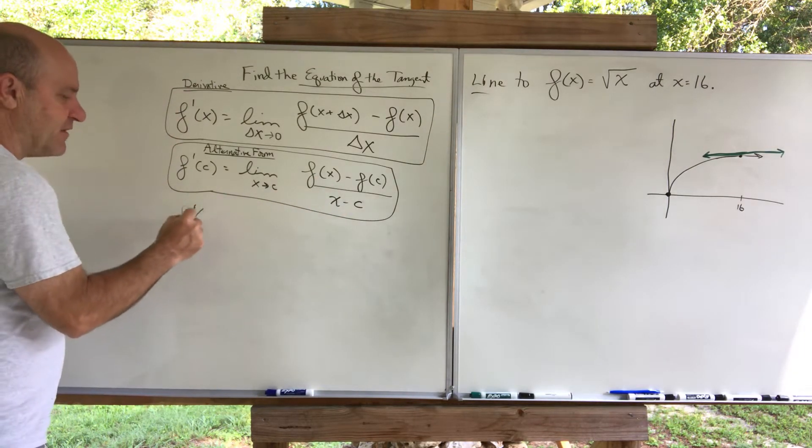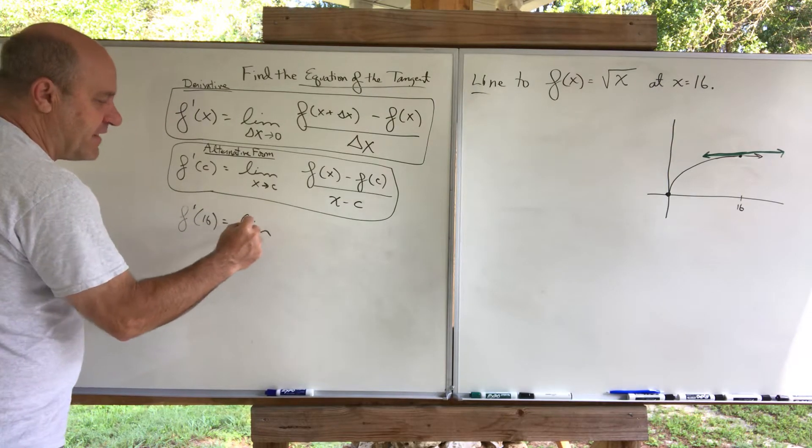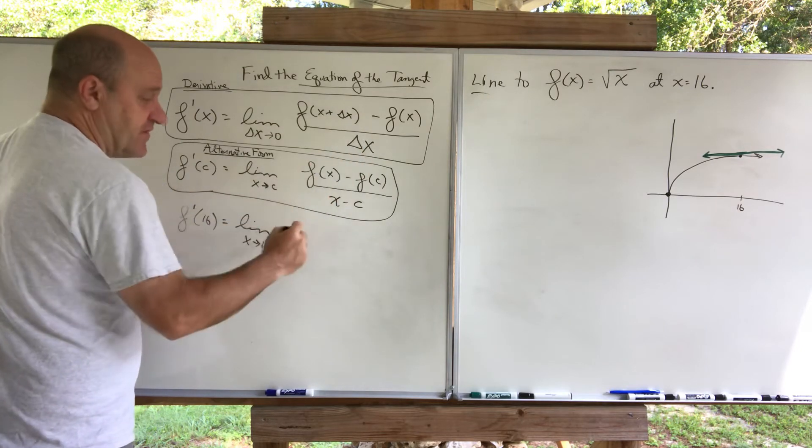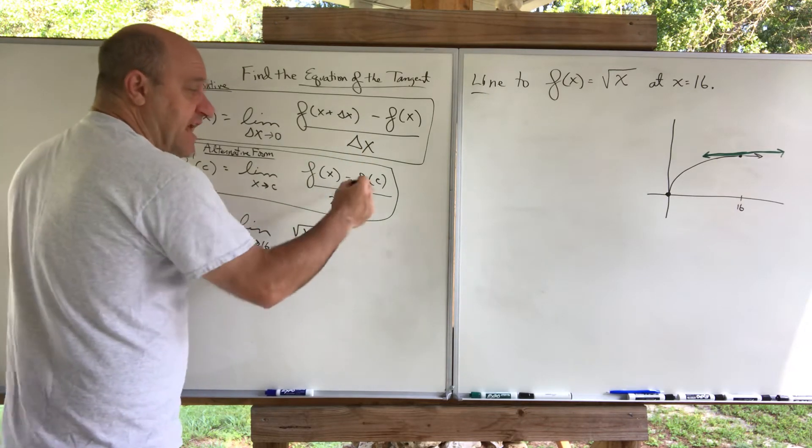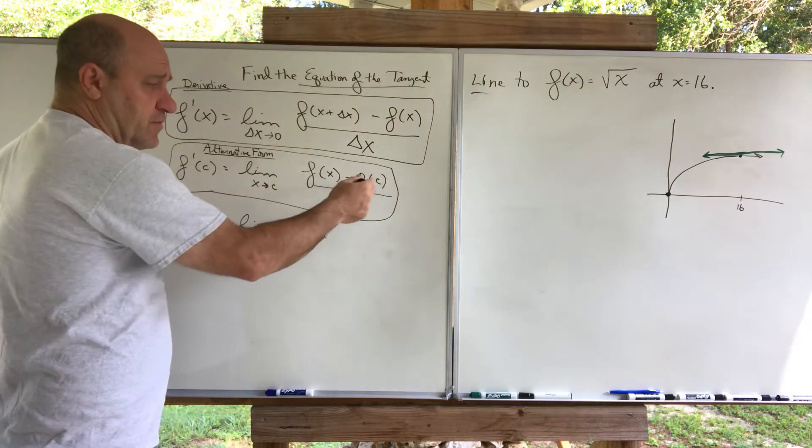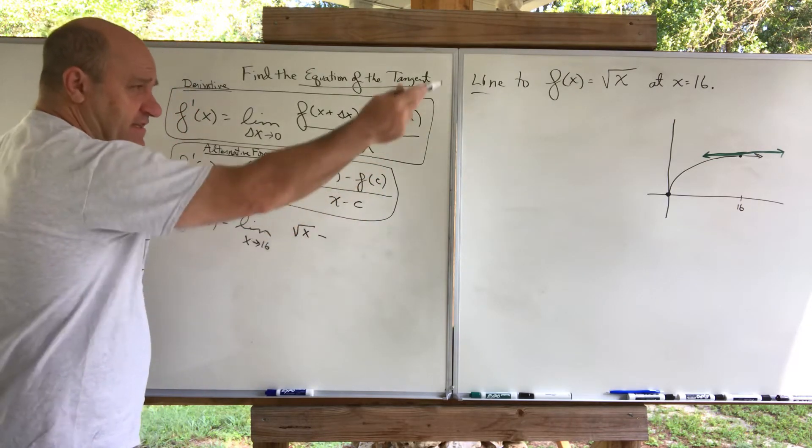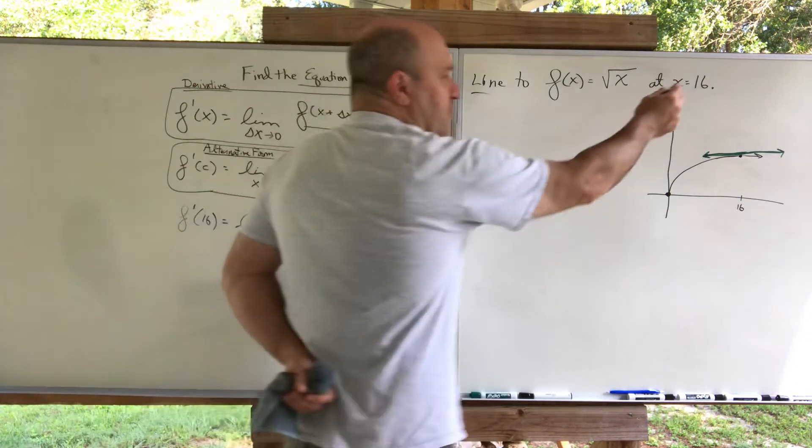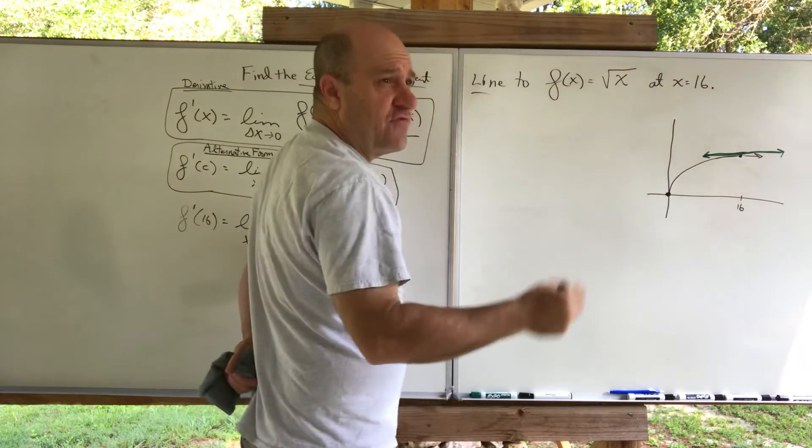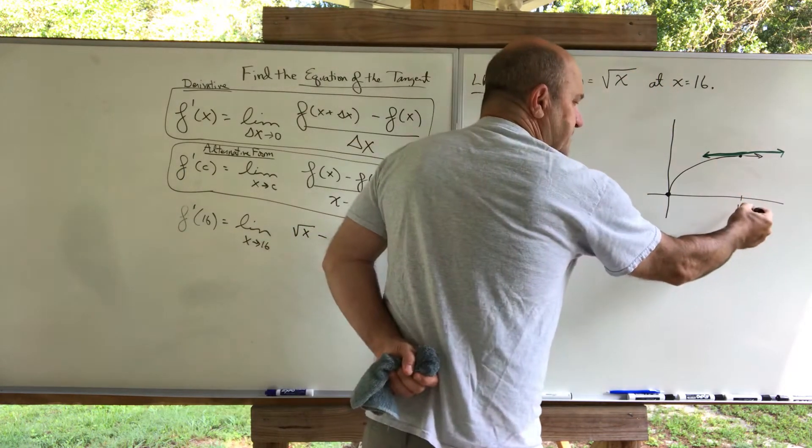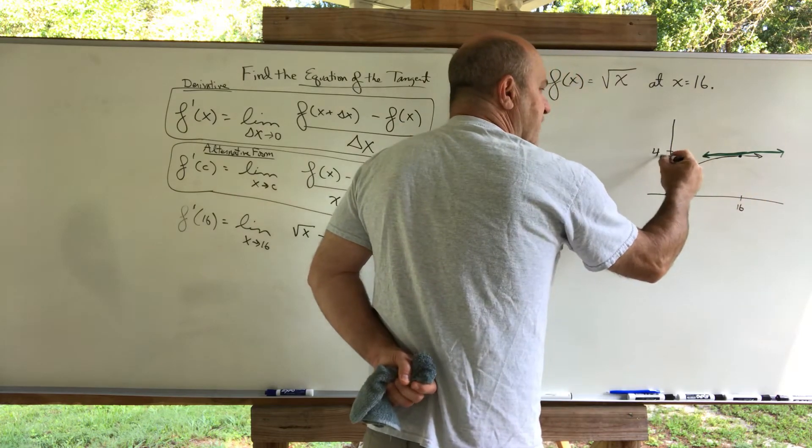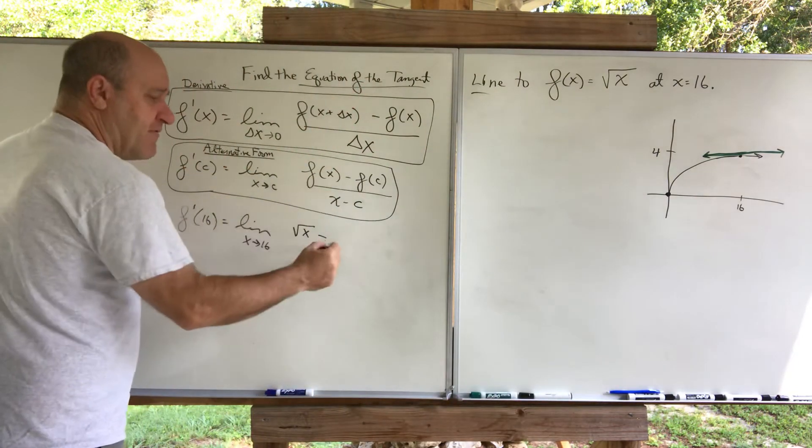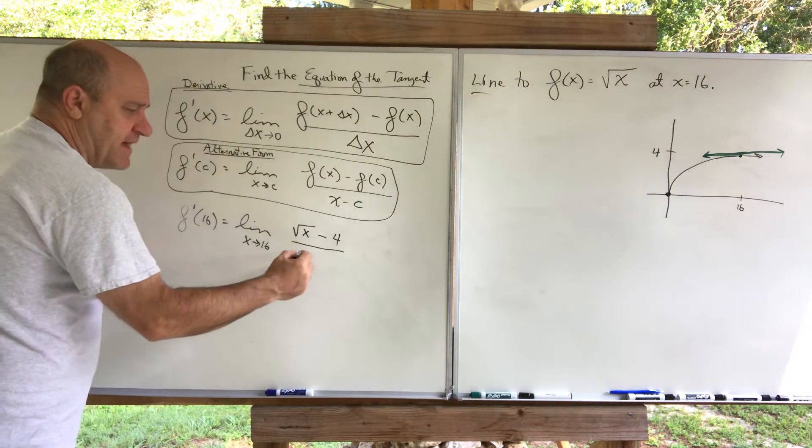I want to do the limit, then, as x approaches 16. I want to do f of x. That's just the function, square root of x. Minus f of c, which is the function at 16. C is 16 in this question. So I'm plugging in a 16 into the function. When you do plug a 16 into the function, the square root of 16 is 4. By the way, here's the picture. When x is 16, y is 4. That's the point you're at. I still haven't found the slope yet, but that's the y value for all over x minus 16.